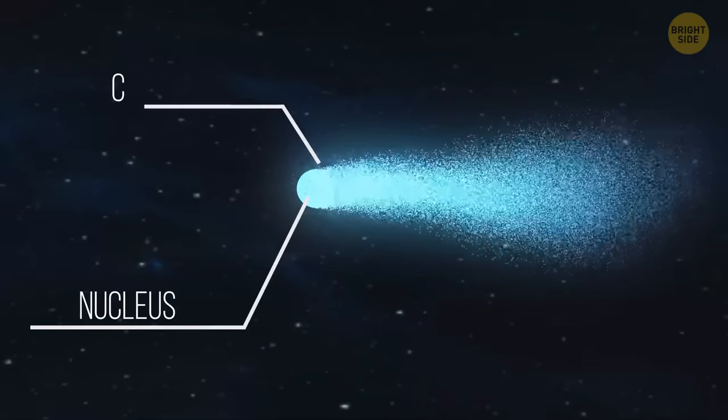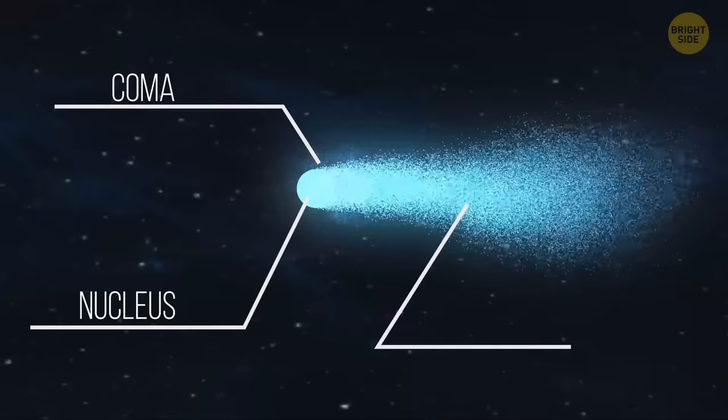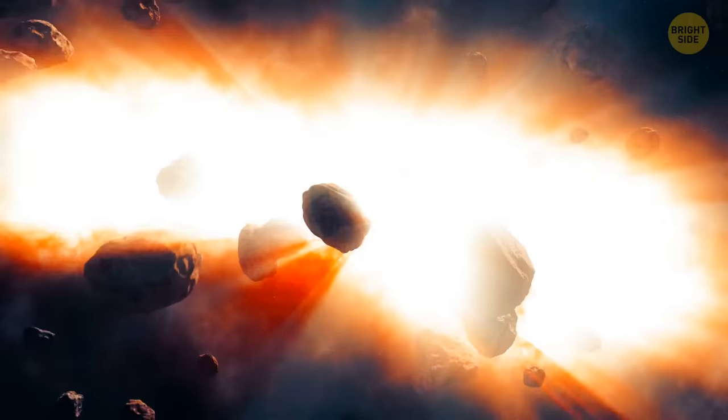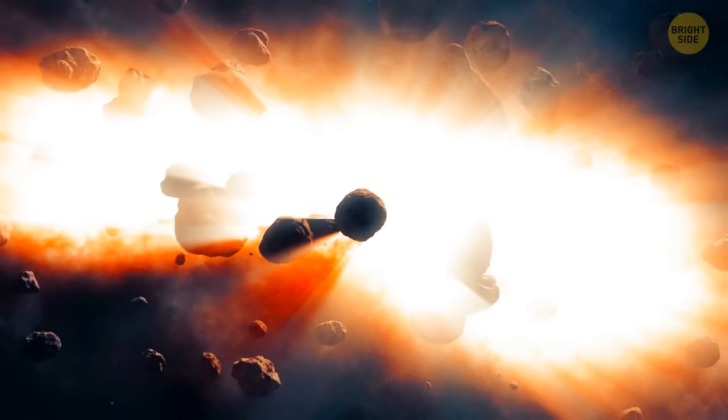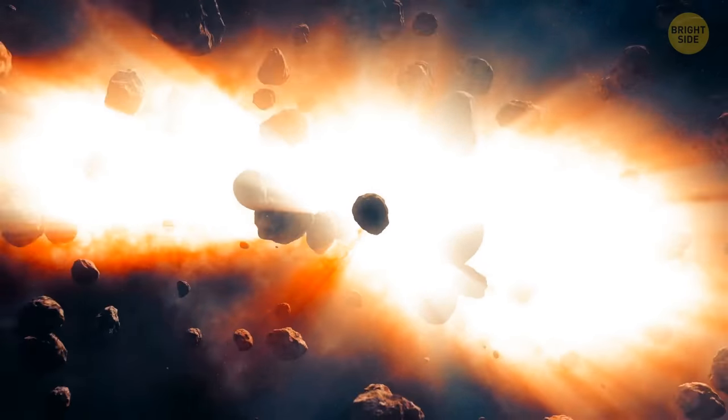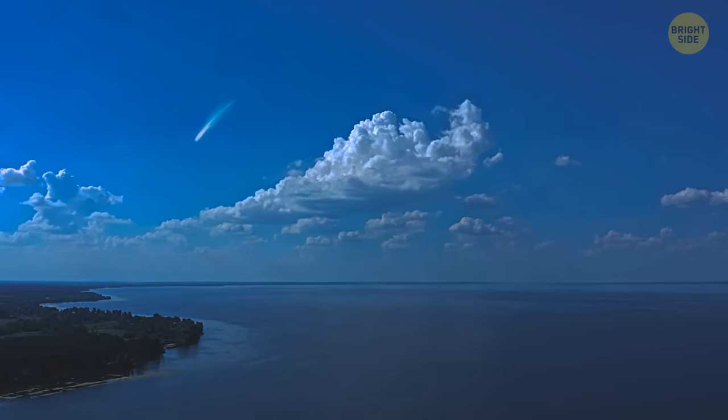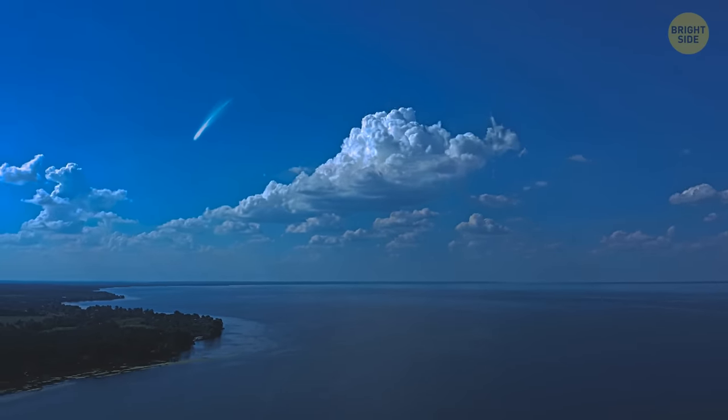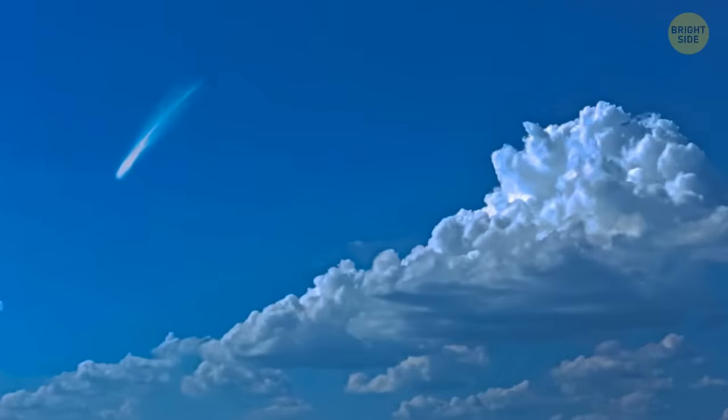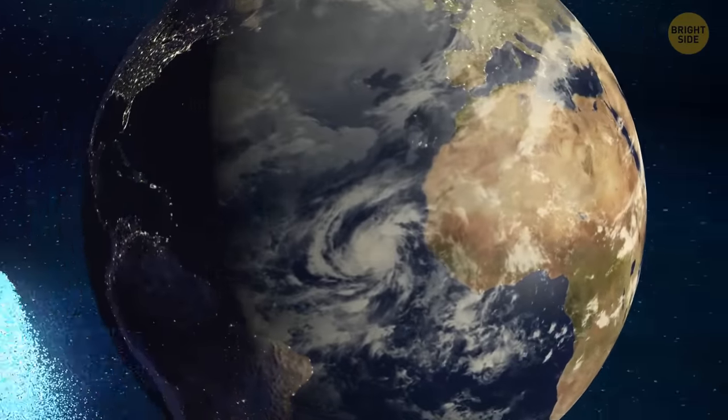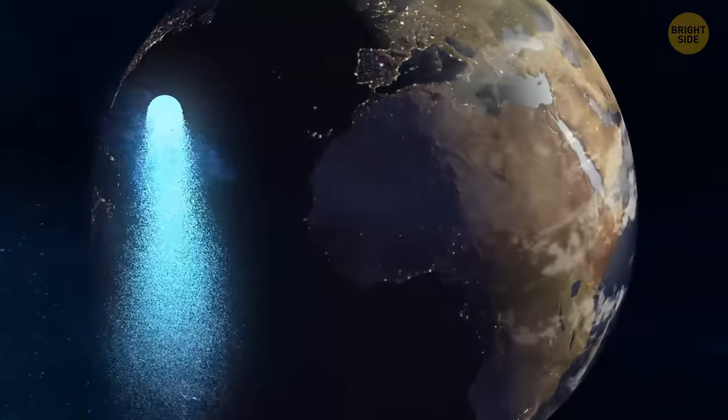Comets are made of four parts: a nucleus, a coma, a dust tail, and an ion tail. But their nucleus makes up most of their total mass. There are over 3,000 comets that we know of, but astronomers think there may be up to 1 billion of them in our solar system. A comet that is bright enough to be visible from Earth without the help of a telescope is called a great comet. Approximately one great comet can be seen every 10 years or so.